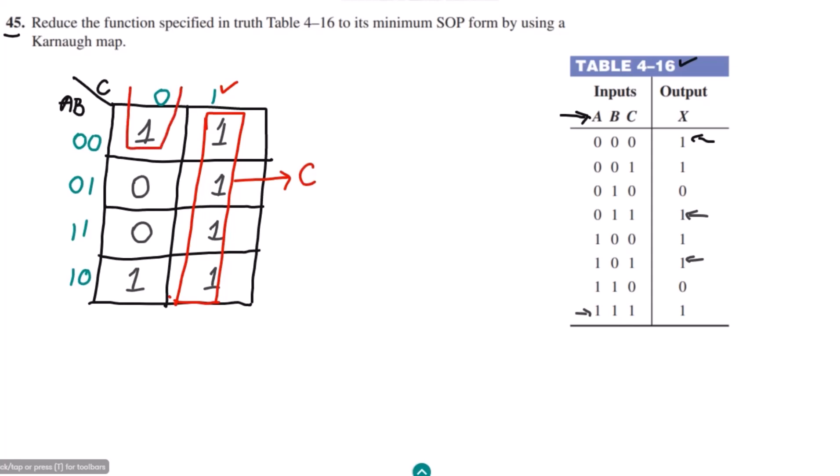Similarly, here this can be combined with this one because these are adjacent to each other and any adjacent terms have the difference of one bit between them. Therefore, the only difference between them is of this A, so BC remains the constant. Therefore, for these terms we have B complement C complement. This is constant, this is constant, and this is also constant.